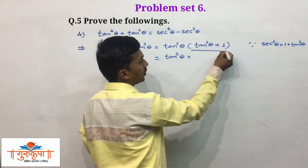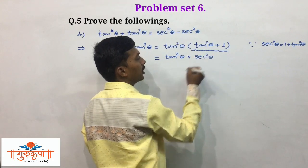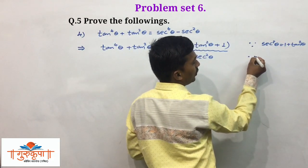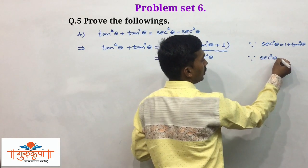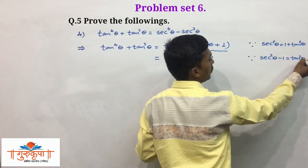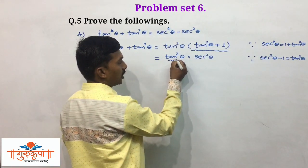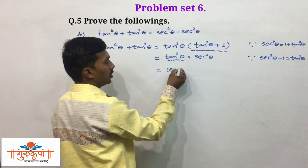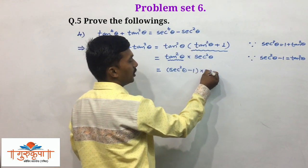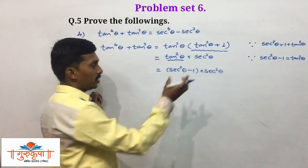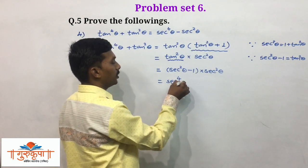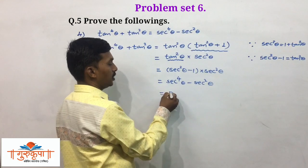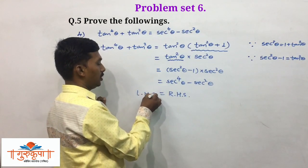We write sec squared theta in place of (1 plus tan squared theta). Now for the remaining tan squared theta: if we transfer 1 to the left side of the identity sec squared theta equals 1 plus tan squared theta, we get sec squared theta minus 1 equals tan squared theta. So in place of tan squared theta, we write (sec squared theta minus 1), multiplied by sec squared theta. Taking the multiplication: sec squared theta times sec squared theta gives sec to the power 4 theta, minus sec squared theta times 1 gives sec squared theta, which is RHS. So LHS equals RHS.